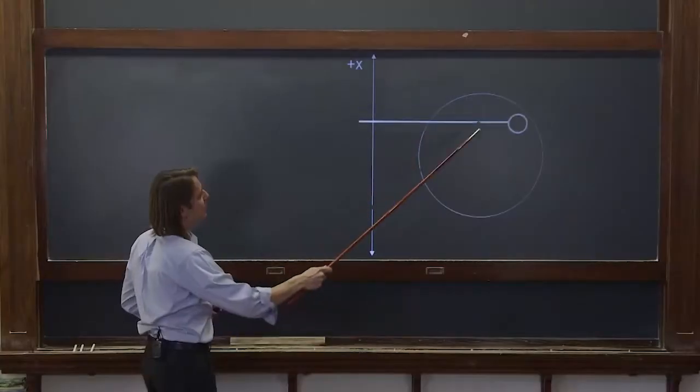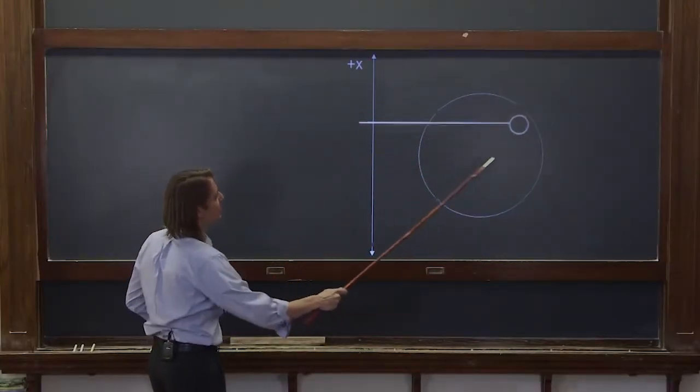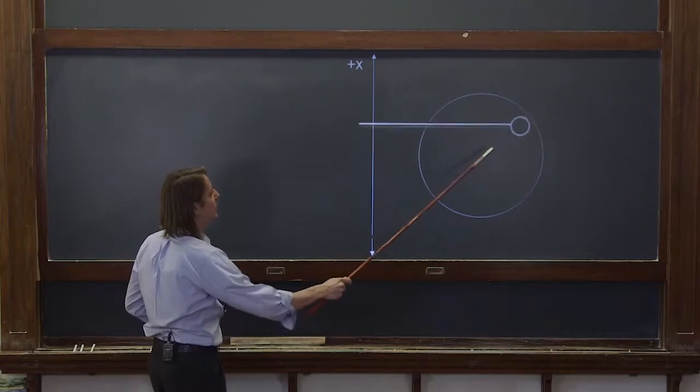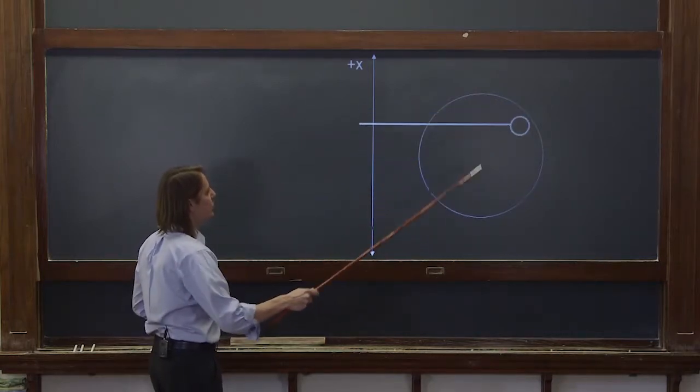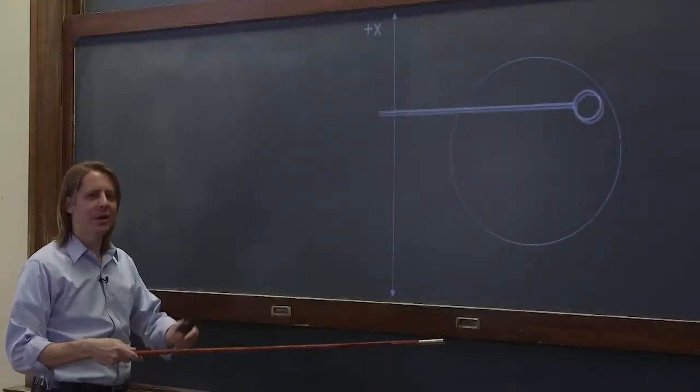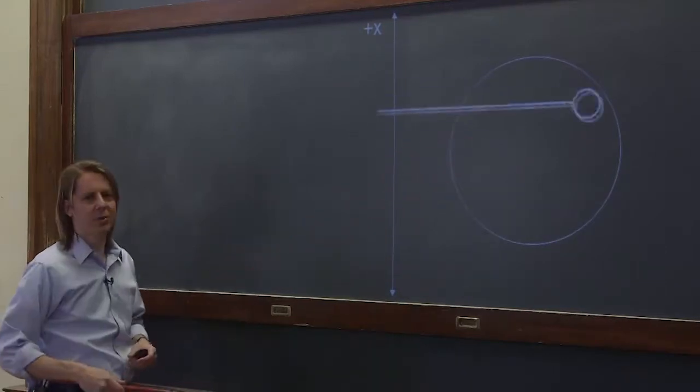So circular motion is actually simple harmonic motion on one axis, and it's also simple harmonic motion on this axis. So it's really two sinusoids on two axes, and they're 90 degrees out of phase, is one way to describe circular motion.